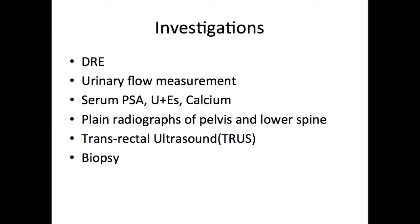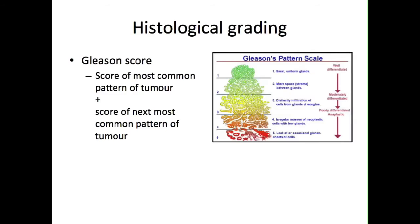Confirmation of prostate cancer is achieved by carrying out a transrectal ultrasound-guided biopsy. Once the diagnosis has been confirmed, staging of the tumour needs to be carried out using an MRI of the abdomen and pelvis. Histological analysis of the biopsy is used to determine the grading of the malignancy, which is important in predicting the prognosis for the patient.